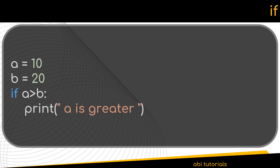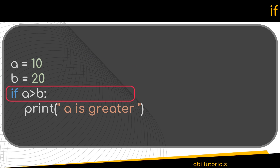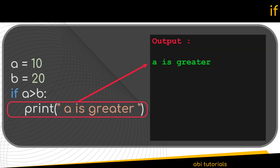The first conditional statement we are going to look into is the if statement. The if statement validates whether the expression which follows it is true or false. Only if the expression is true, then the statement given within the if block is executed. In the given example, we have created two variables a and b with values 10 and 20 respectively. In this if statement, we have the expression which checks whether a is greater than b. As per the example, a > b evaluates to true and hence the value within the if block will be displayed in the output.